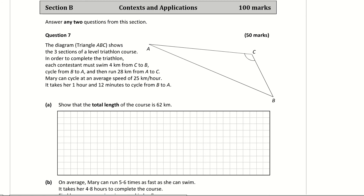2021 Paper 2 Question 7. Let's fill in some information onto the diagram first. We know that the swim is 4 kilometres from C to B, the run is from A to C which is 28 kilometres. In part a, the question asks us to show that the total length of the course is 62 kilometres, so we need to find the distance of the cycle.